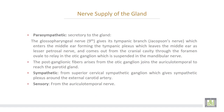The nerve supply of the gland: the parasympathetic supply is secretory and motor to the gland. It comes from the glossopharyngeal nerve, the ninth cranial nerve. It gives off its tympanic branch, sometimes called the Jacobson's nerve, which enters the middle ear forming the tympanic plexus, and leaves the middle ear as the lesser petrosal nerve. It exits the cranial cavity through the foramen ovale to relay in the otic ganglion, which is suspended from the mandibular division of the trigeminal nerve. The postganglionic fibers arising from the otic ganglion join the auriculotemporal nerve to reach the parotid gland.